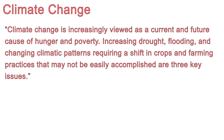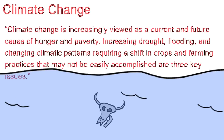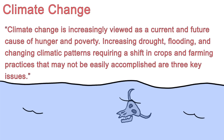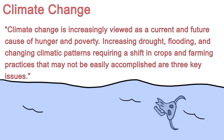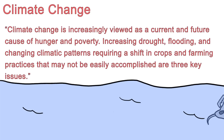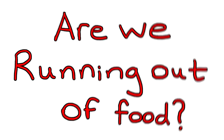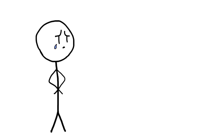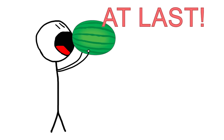Finally, the fourth main cause of world hunger is climate change. According to worldhunger.org, climate change is increasingly viewed as a current and future cause of hunger and poverty. Increasing drought, flooding, and changing climatic patterns requiring a shift in crops and farming practices that may not be easily accomplished are three key issues. Of course, this doesn't answer the question: are we running out of food?